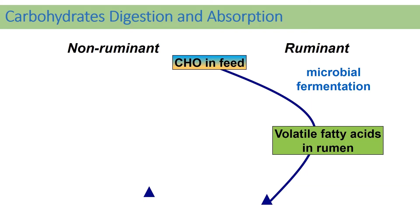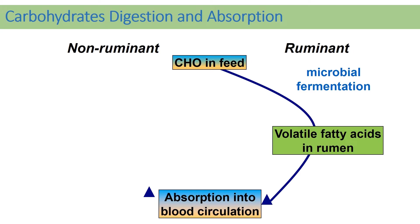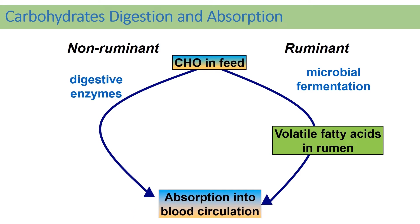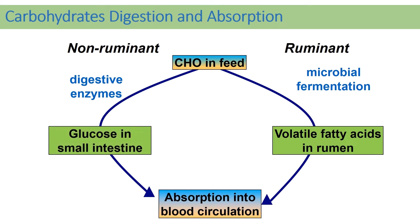When we compare ruminant with non-ruminant species, in ruminant animals carbohydrates are mainly fermented in the rumen through microbial fermentation, producing volatile fatty acids. Those volatile fatty acids are absorbed through the ruminal wall and carried through blood circulation to the liver or tissues. In non-ruminant animals, digestive enzymes are responsible for carbohydrate digestion, and the end product is glucose, produced and absorbed in the small intestine, then carried to the liver. This major difference applies equally to poultry birds.